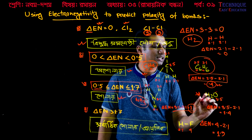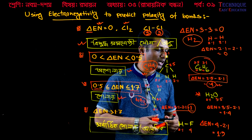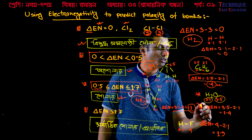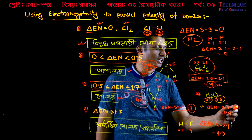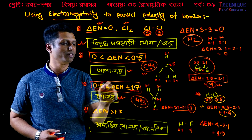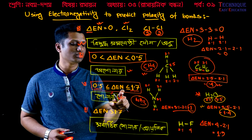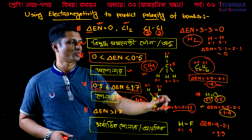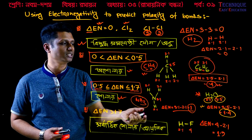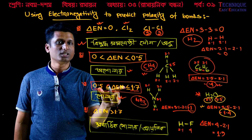Now let's look at water. What is the difference between hydrogen and oxygen? Hydrogen's electronegativity is 2.1 and oxygen's electronegativity is 3.5. So the difference is 3.5 minus 2.1, which equals 1.4. Since 1.4 is less than 1.7, we call it polar. The answer is 1.4, which is in the polar range.